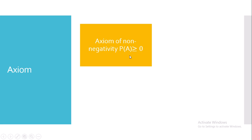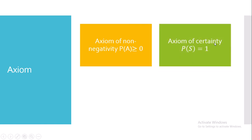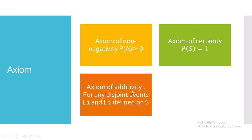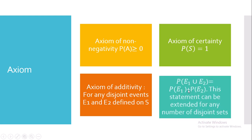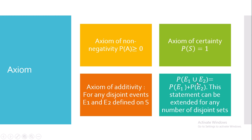The first axiom is that the probability of A should be greater than or equal to zero — that is, it should be a non-negative value. The second axiom is the axiom of certainty: probability of S is equal to one. The third axiom is the axiom of additivity: for any disjoint events E1 and E2 defined on S, the probability of E1 union E2 is equal to probability of E1 plus probability of E2. This can be extended for any number of disjoint sets. The three axioms are: axiom of non-negativity, axiom of certainty, and axiom of additivity.